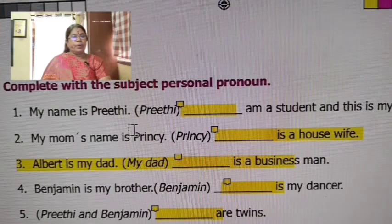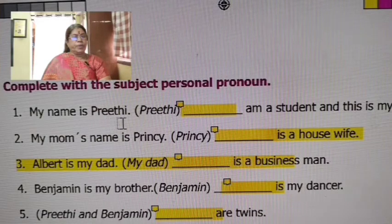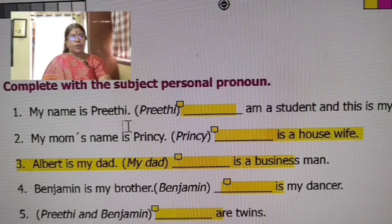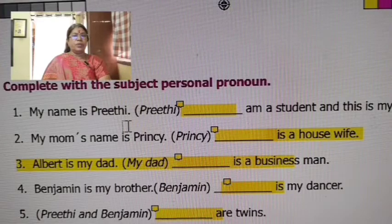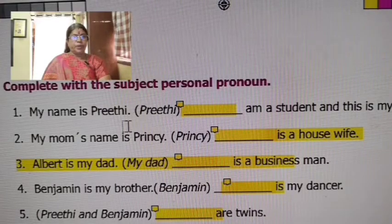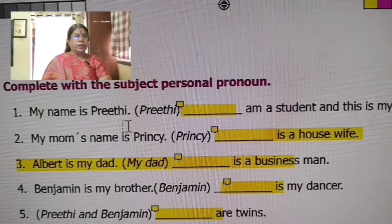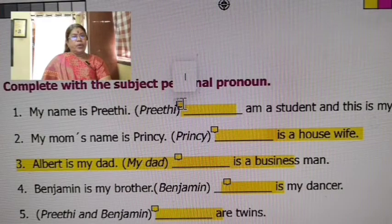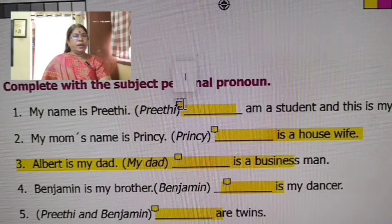What does this mean? Let's say: 'My name is Preethi.' When you introduce yourself, what is Preethi? She is a student. So the answer is 'I' — 'I am a student.' The first-person subject pronoun is 'I'.